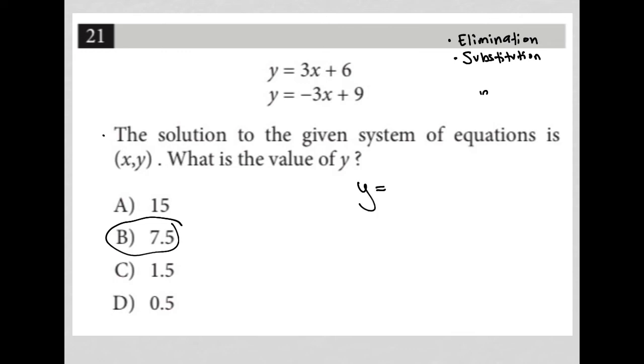I'm going to rewrite my system. y equals 3x plus 6. y equals negative 3x plus 9. Notice that by simply combining these equations together, I'd get a 2y here. But my x's would eliminate, which is exactly what I want. And then 9 plus 6 is 15. And then divide both sides by 2. And I get y equals 7.5.